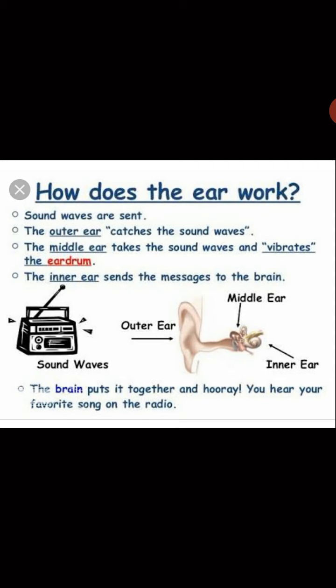The middle ear takes the sound waves and vibrates the eardrum. There is a part called the eardrum that vibrates the sound waves, as sound travels in the form of waves or vibrations. The inner ear then sends this message to the brain. The brain puts it together and we can hear the song on the radio.